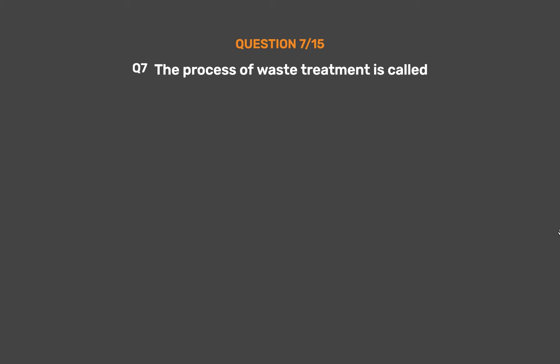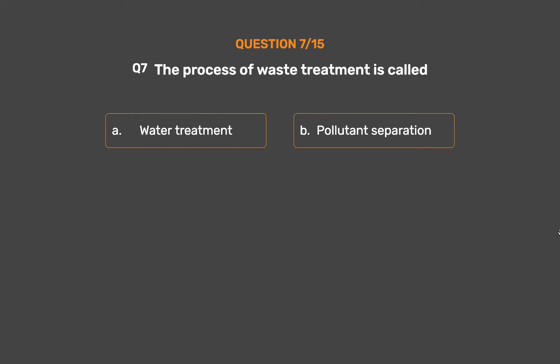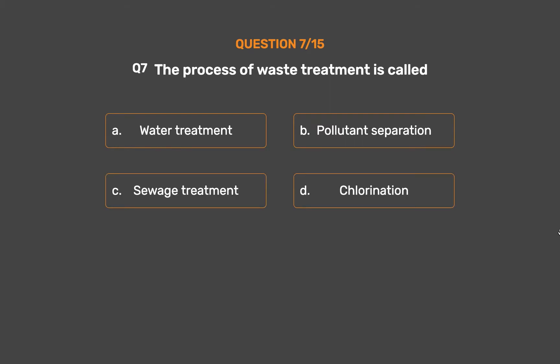Question Number 7. The process of waste treatment is called. Option A: Water treatment. Option B: Pollutant separation. Option C: Switch treatment. Option D: Chlorination.